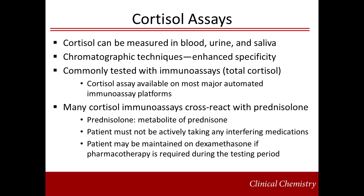Cortisol can be measured in serum, urine, and saliva. As a small molecule, cortisol and other corticosteroids can be easily identified by chromatographic techniques, such as gas or liquid chromatography, coupled to a detector such as a mass spectrometer. Such methods are generally very sensitive and specific and can be used to detect cortisol at very low concentrations. More often, total cortisol is measured by immunoassay. Most major automated immunoassay platforms have reagents available to measure cortisol. However, many cortisol immunoassays may cross-react with similar compounds, most commonly prednisolone.